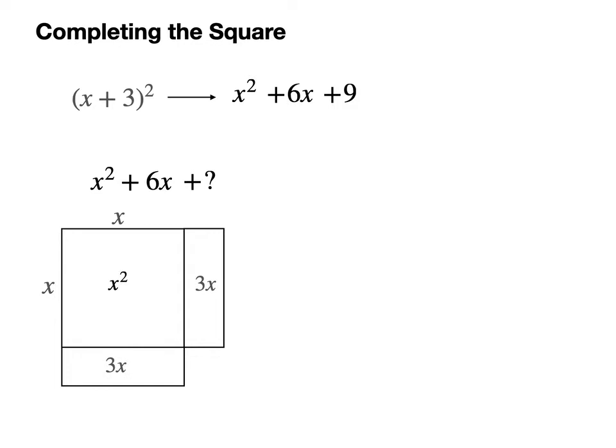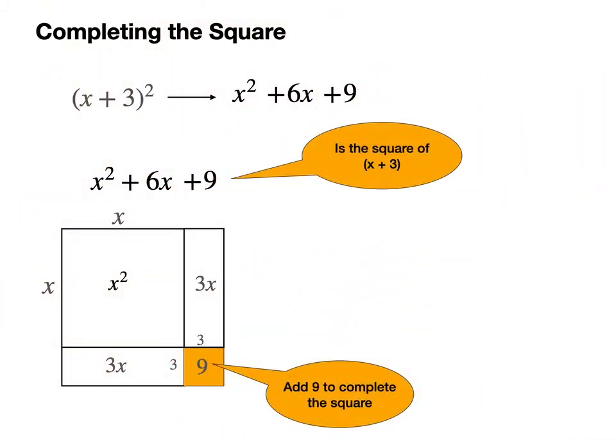And now the missing piece of the jigsaw. I want to end up with a square shape overall. I need to add another smaller square in the bottom right hand corner. And this is it. It's a 3 by 3 square, so the number you need to complete the square is 9. Pop it in, and by adding 9 I have just completed the square and it's the square of x plus 3.